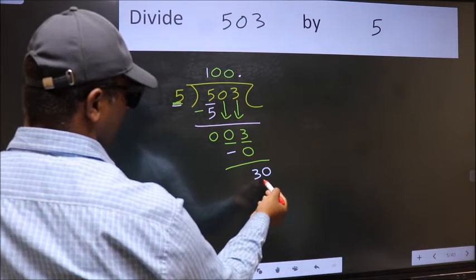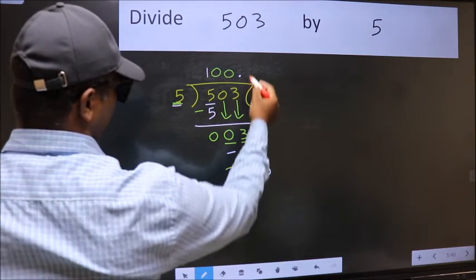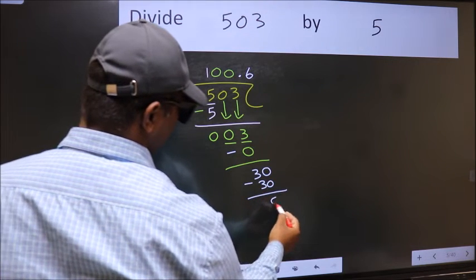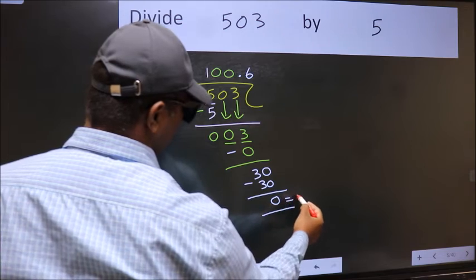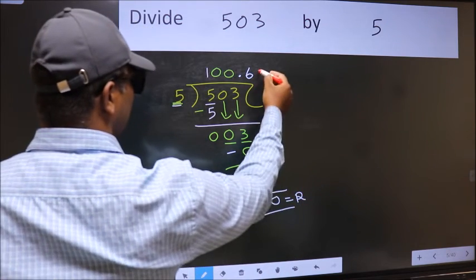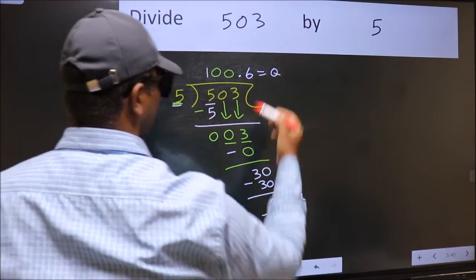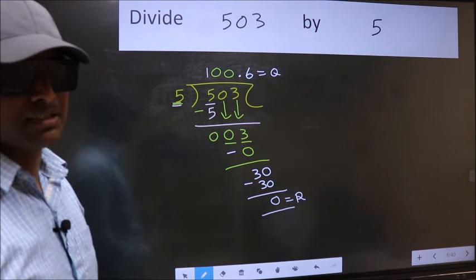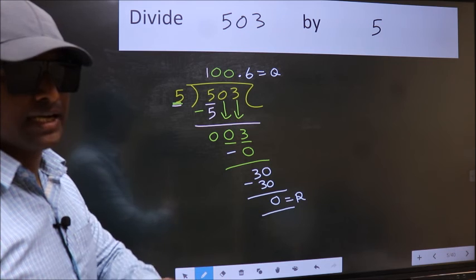So now we can put dot and take 0. So 30. When do we get 30 in 5 table? 5, 6, 30. Now we should subtract, we get 0. This is our remainder and this is our quotient. Did you understand where does the mistake happens? You should not do that mistake.